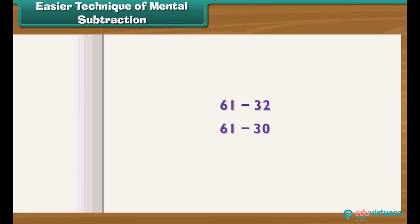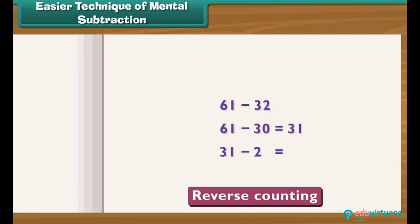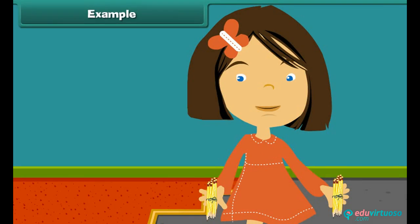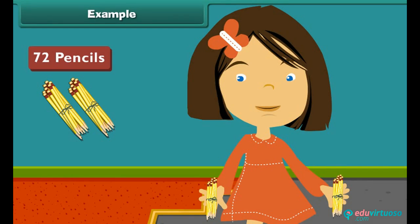Easier technique of mental subtraction: To subtract 32 from 61, first subtract 30 from 61 — the answer is 31. Now subtract 2 from 31 using reverse counting: 30, 29. So 29 is the correct answer.